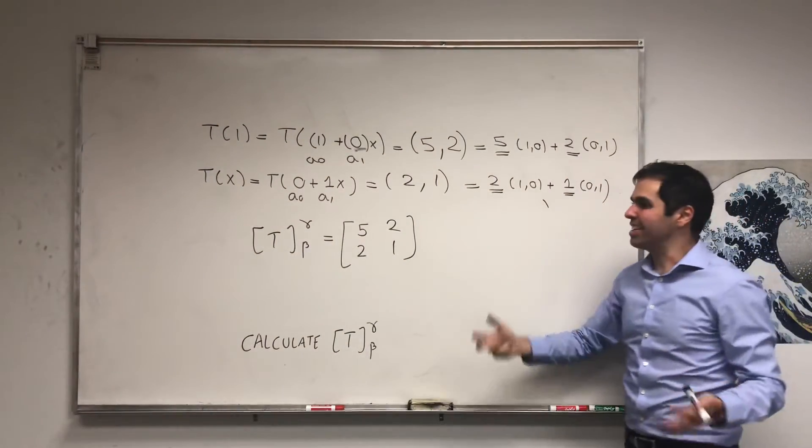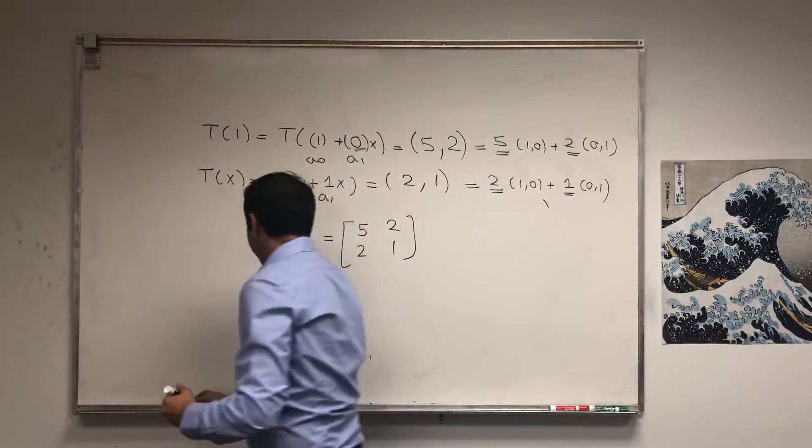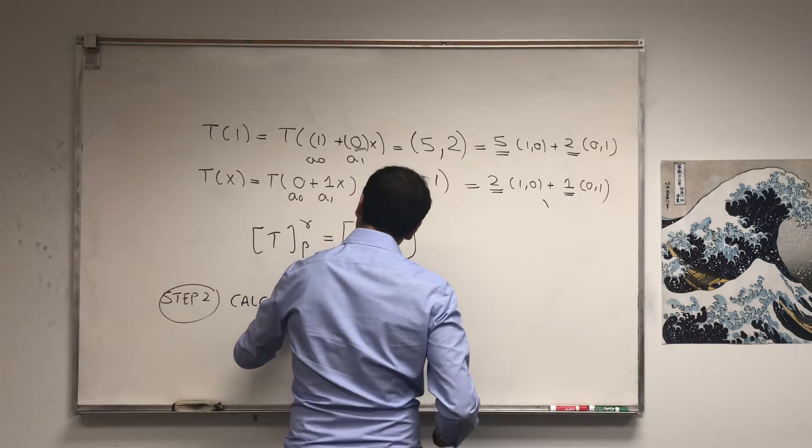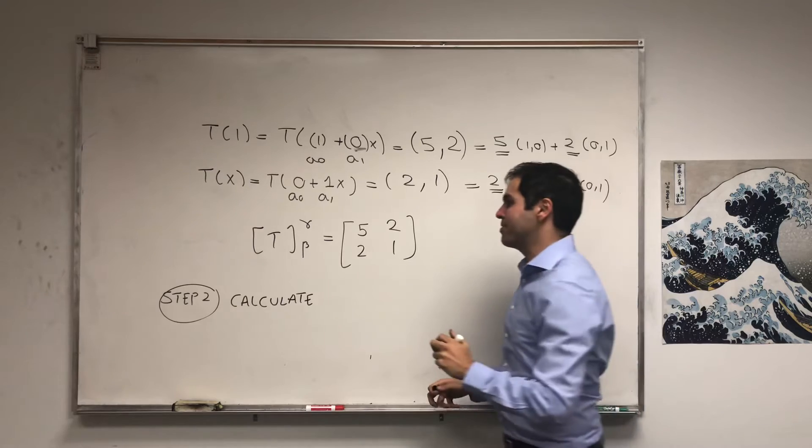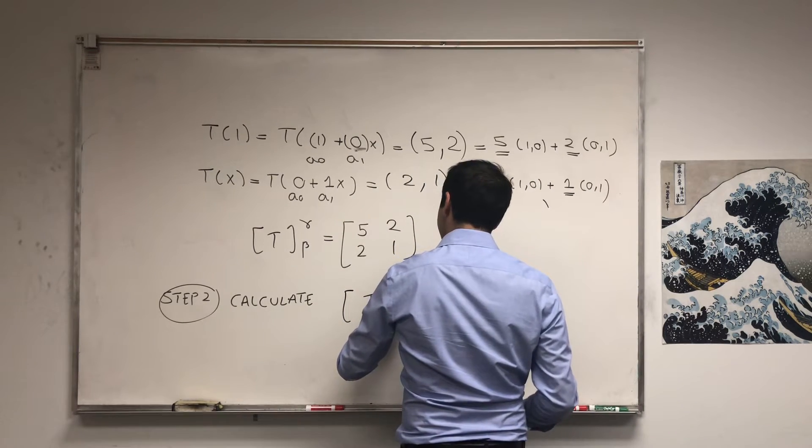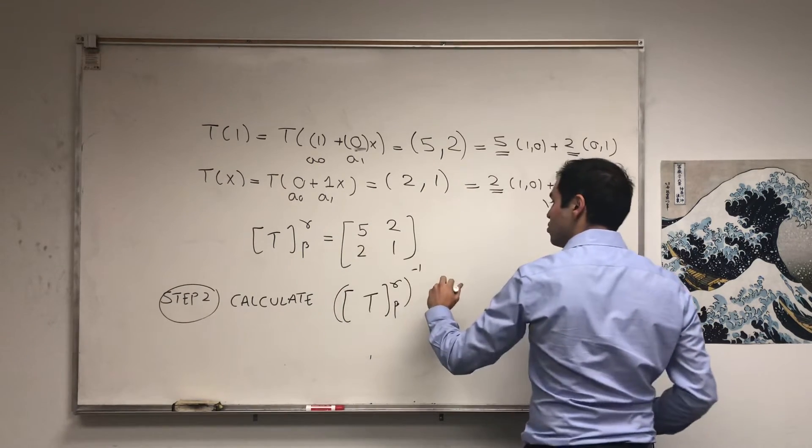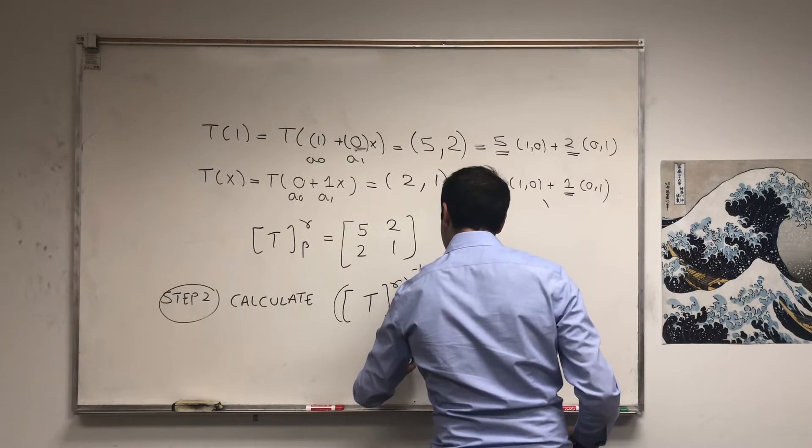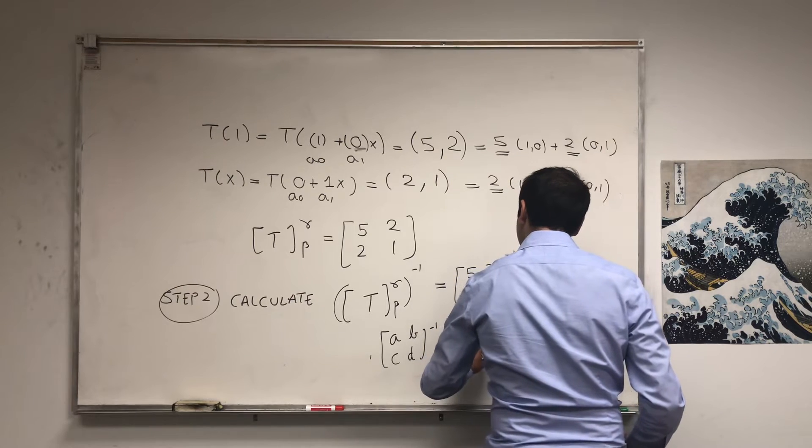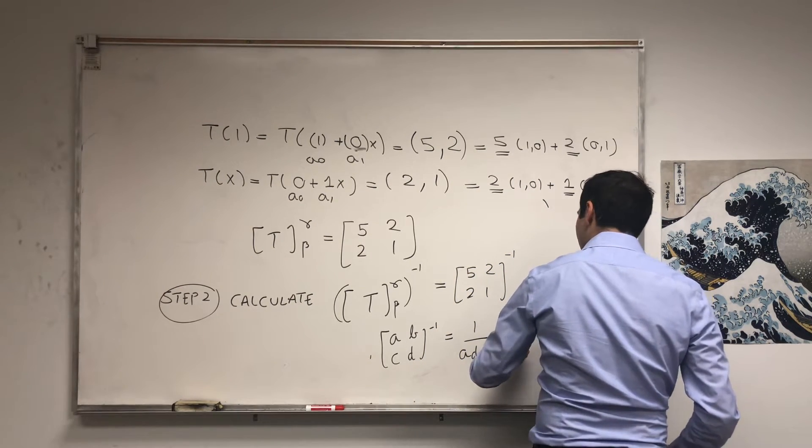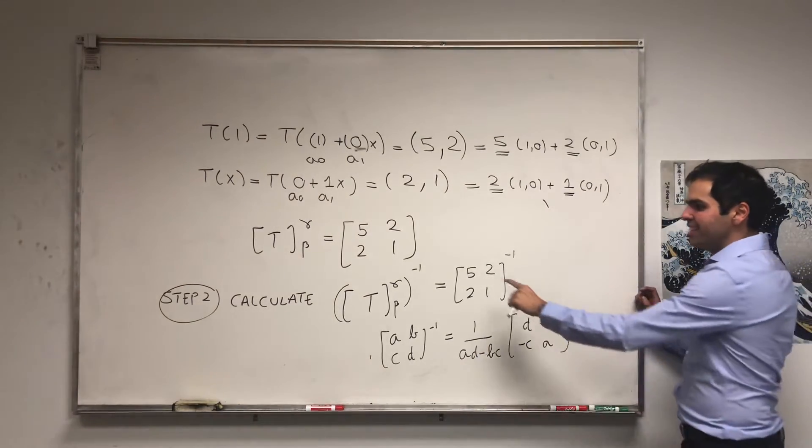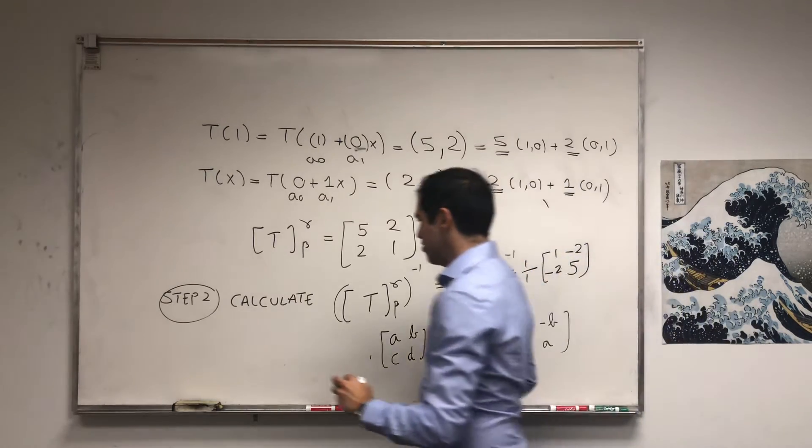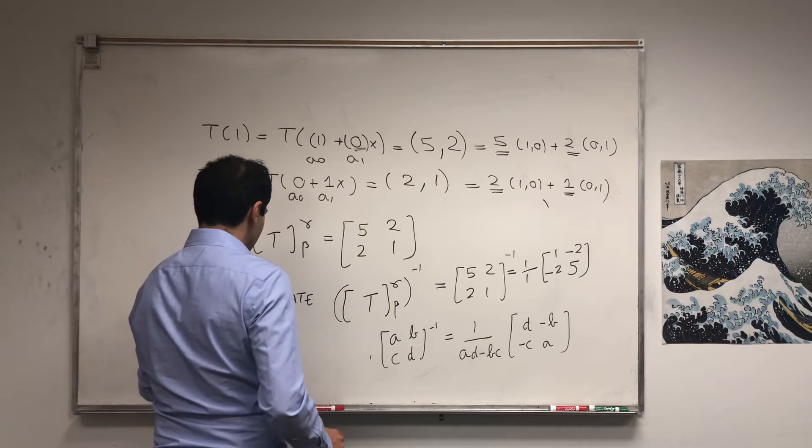Now, we found this concrete matrix. One thing we can do is calculate the inverse of this matrix. So, step 2, calculate T of this inverse, which just means this matrix inverse. And remember the inverse of a,b,c,d is 1 over ad minus bc times d, minus b, minus c, a. Here, conveniently, the determinant is 1. So 1 over 1 times 1, minus 2, minus 2, 5. That then just becomes 1, minus 2, minus 2, 5.